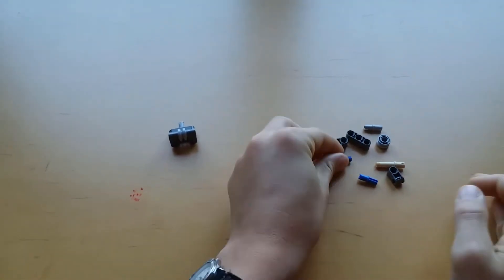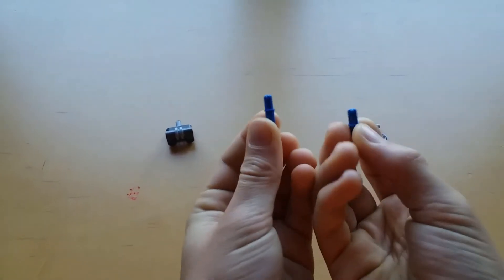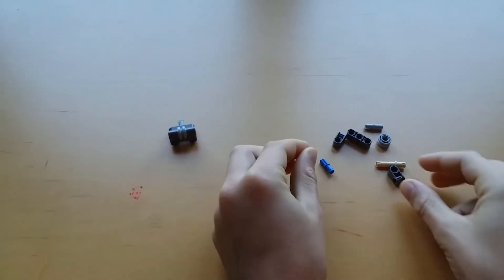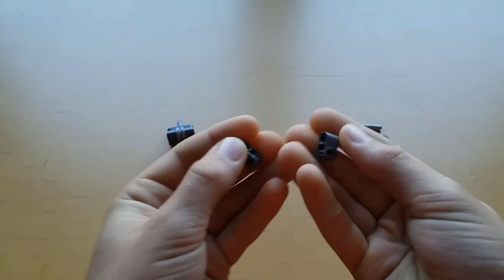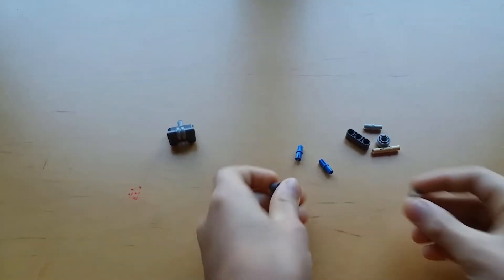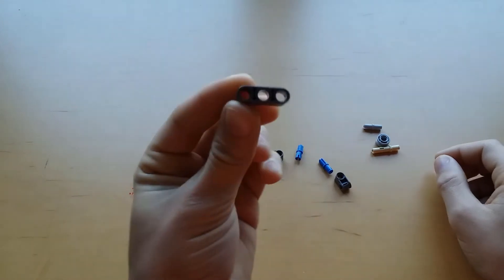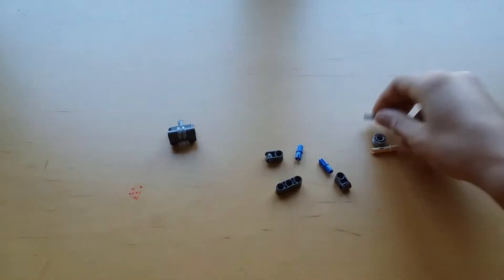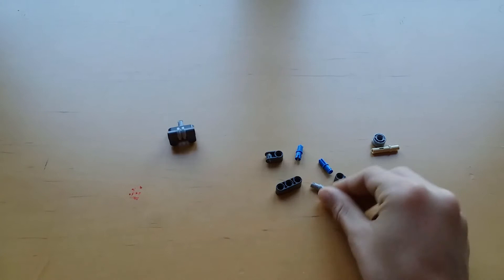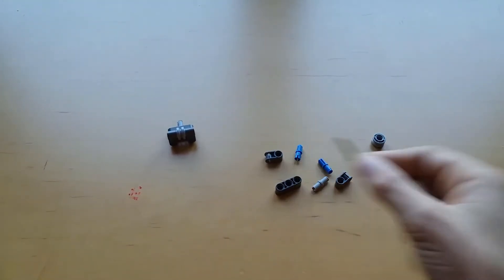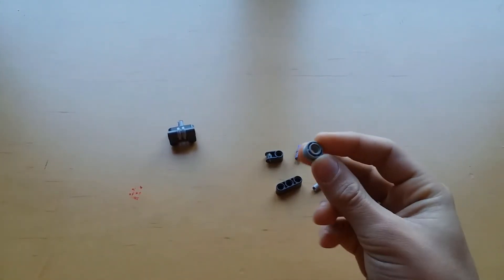To build the small one we'll need these pieces. First you'll need two of these half axle half pegs, two of these, one three long beam, a two long frictionless peg, a three long frictionless peg, and a small wheel.